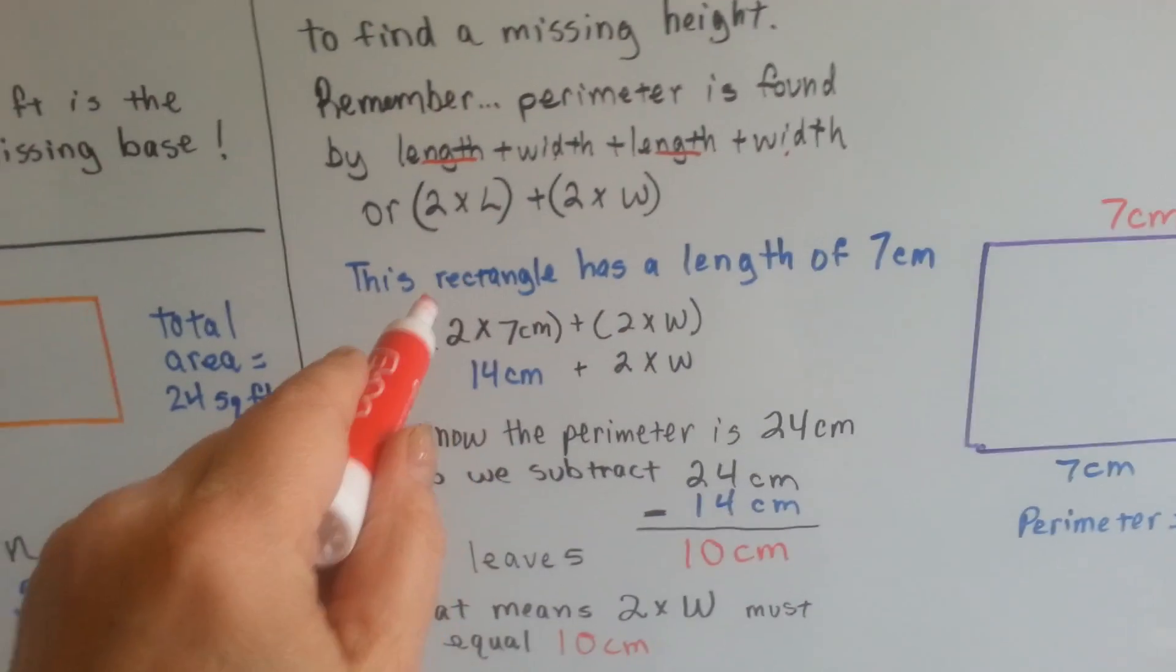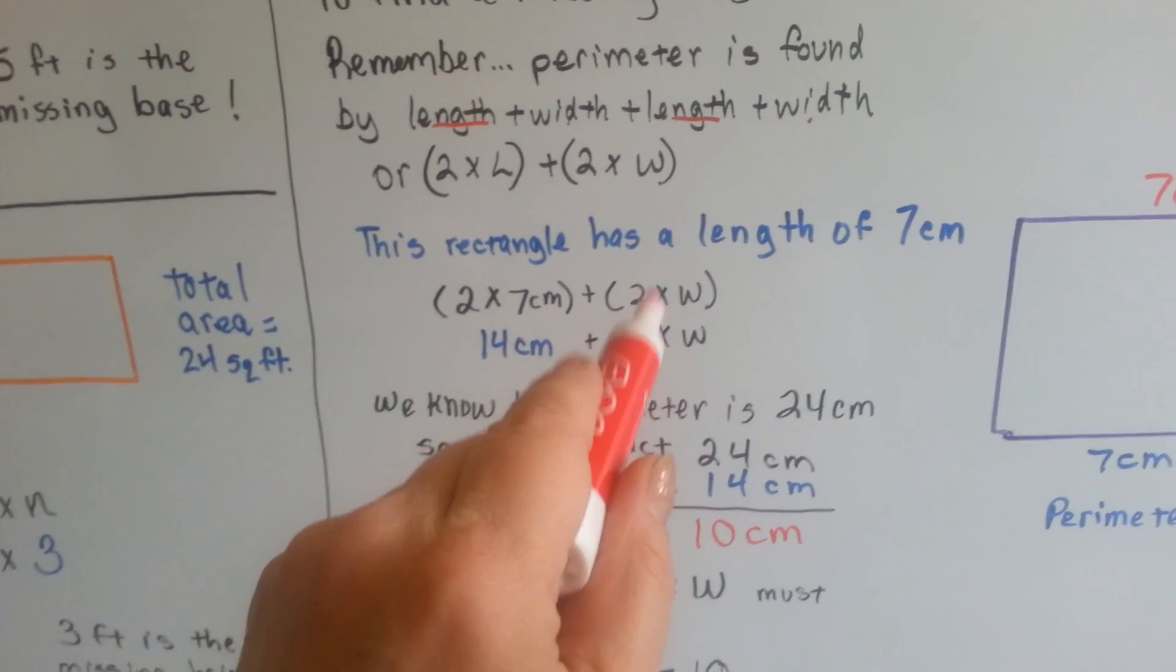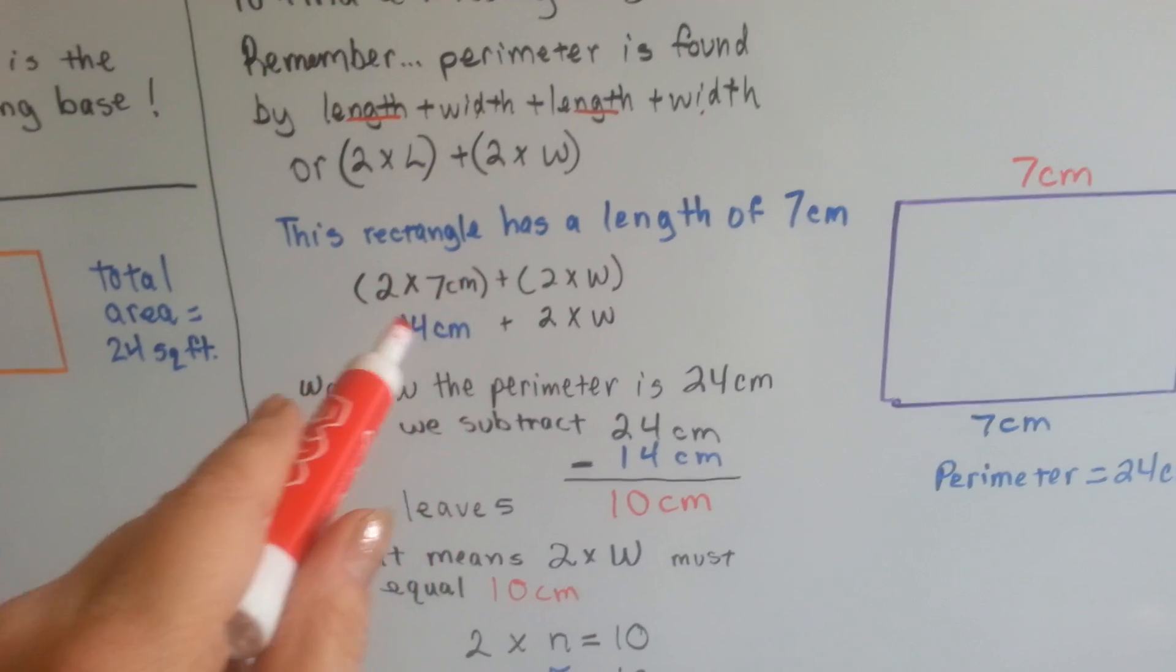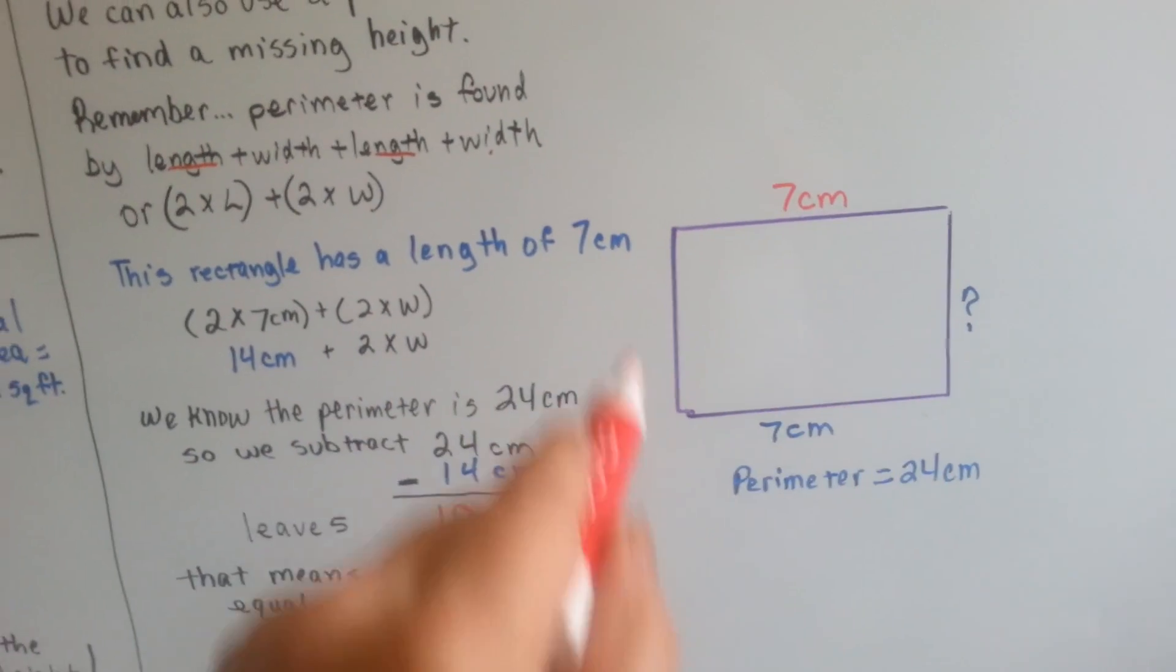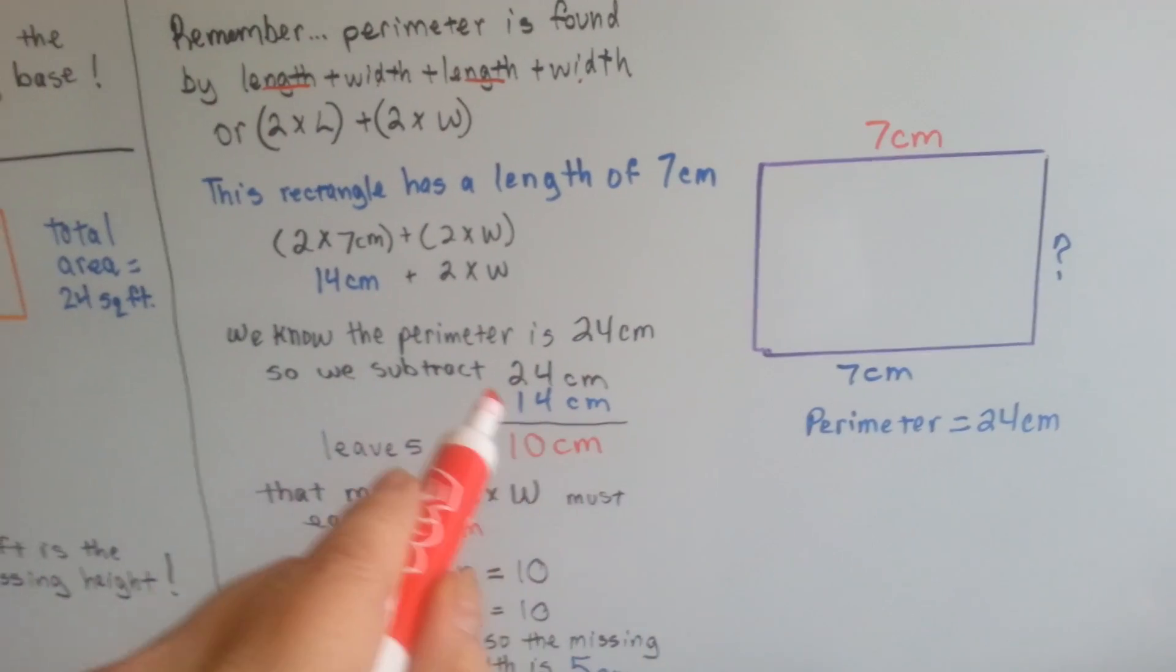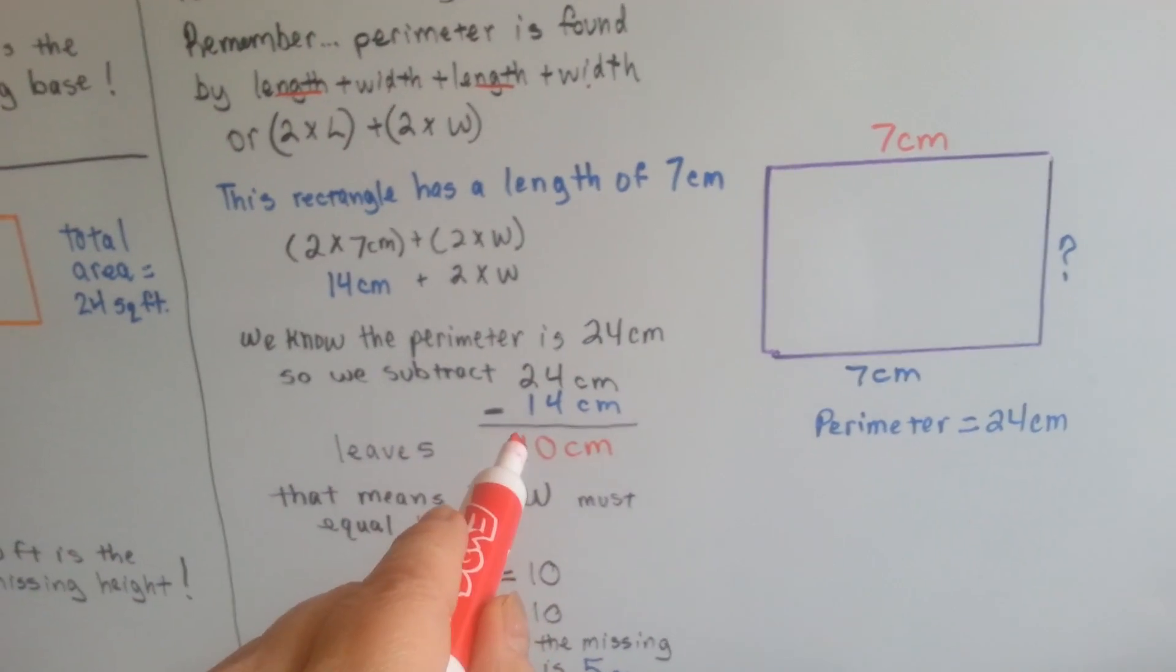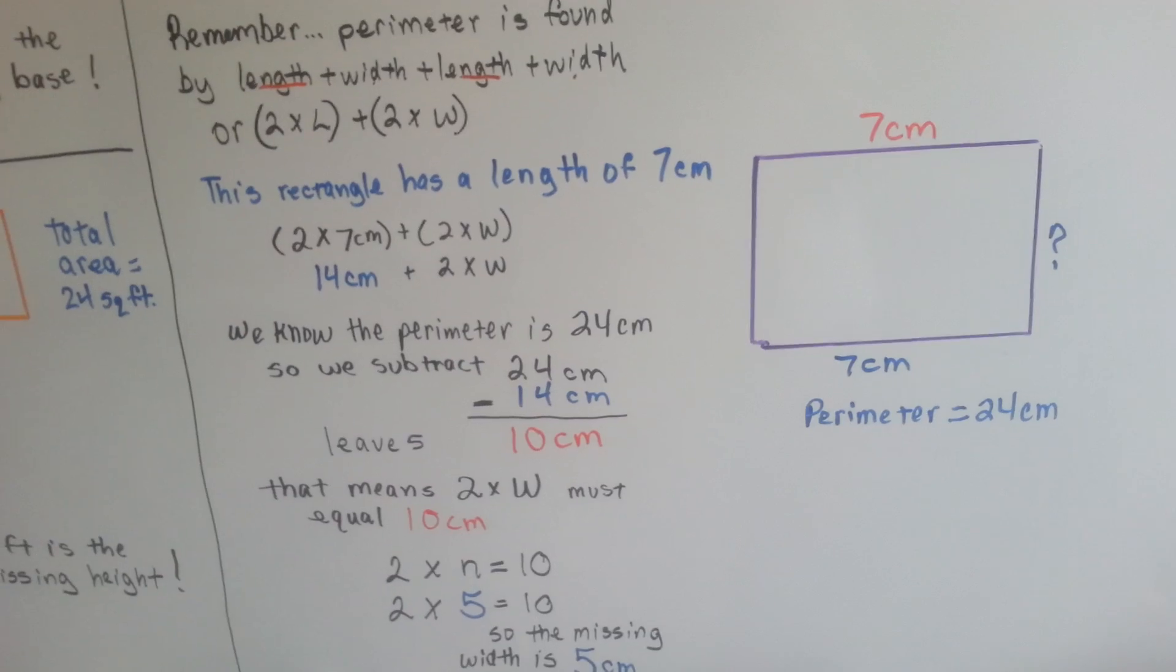If we plug it into the formula, 2 times 7 centimeters, well that part of it is 14, but we don't know the 2 times w because we're missing a piece. We know that it's a 24 centimeter line, purple line going all the way around. And if this one and this one equals 14, we take the 14 from the total of 24 and we get 10. So we know that this side and this side together equal 10.